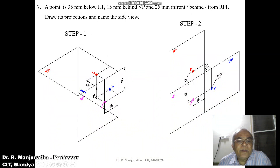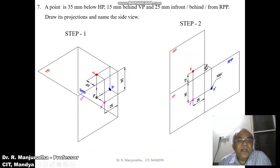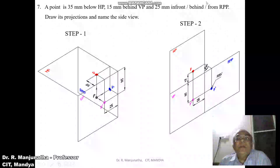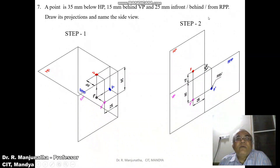Since the image is on the vertical plane, it will be the front view, which is p-dash. Now 15mm behind VP — when you look from the top view, we can see the distance behind VP. The image will fall on the horizontal plane, so it will be small p. That distance is 15mm behind VP. The condition is 25mm from RPP.